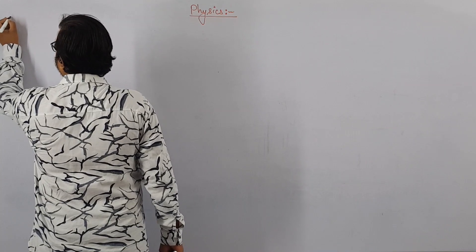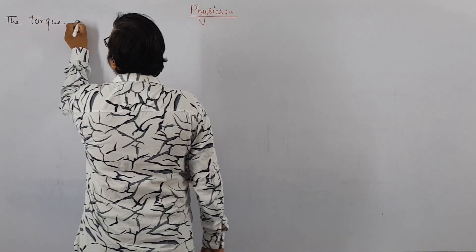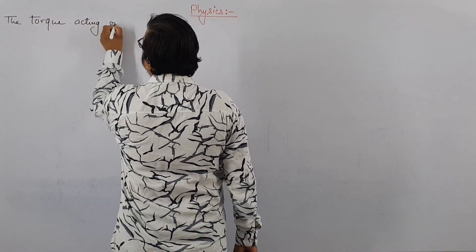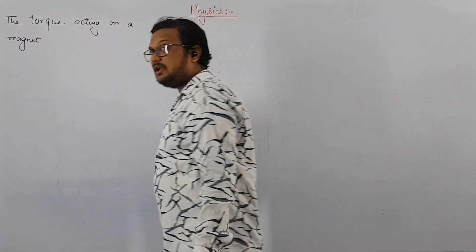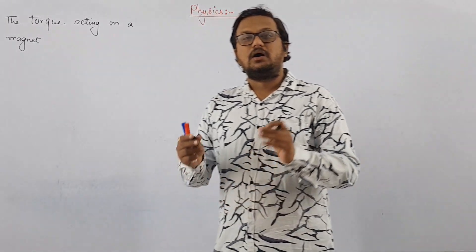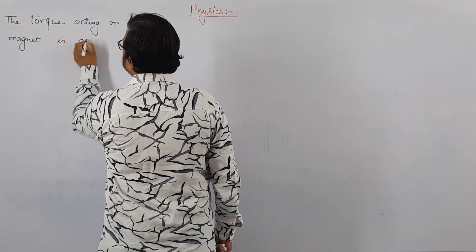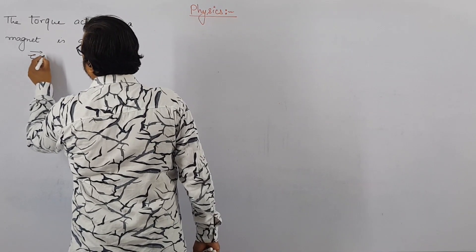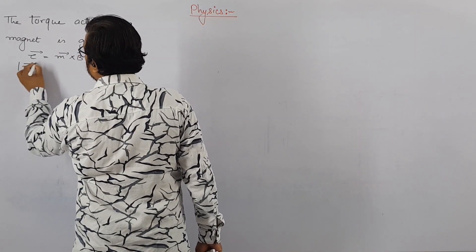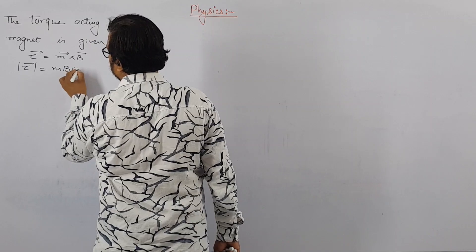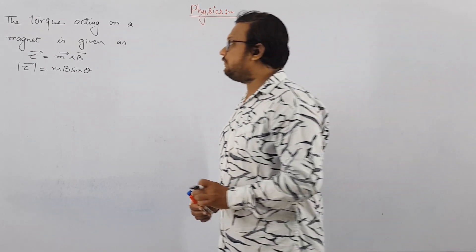We have discussed that the torque acting on a magnet — it may be a bar magnet or solenoid — is given as torque equal to M cross B, or in magnitude, torque equal to MB sin theta. If theta is 0, torque will be 0, and if theta is 90 degrees, torque will be maximum, as we have already discussed.